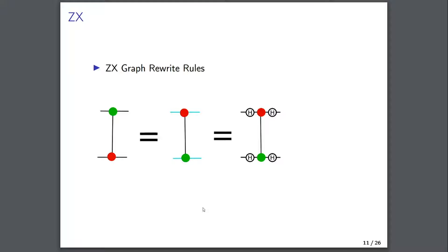ZX consists of nodes and wires. Each node represents a gate, and each wire consists of an input or output — a wire from left to right says this output feeds to the next. We can also make these blue, which represents a Hadamard gate, which you can think of as a quantum Fourier function. All three of these are identical — this isn't a structural change, but the rest of our rewrite rules work very similarly: we don't change any values but we do rewrite what the system looks like.